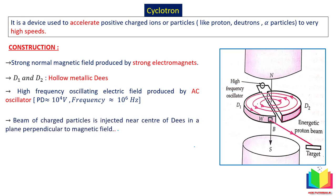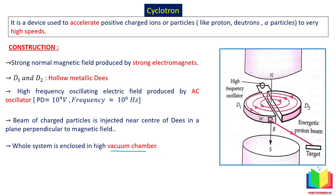Next, a beam of charged particles is injected near the center of the D's — that is where the source of charged particles is located. The whole system is enclosed in a vacuum chamber, because otherwise the protons we want to accelerate would collide with atoms and lose their speed.